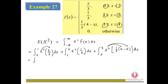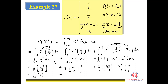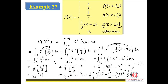We expand by multiplying with X², then write out all terms and integrate each one. We substitute limits: 0 to 1 for the first piece, then 1 to 3 for the second piece, and then 3 to 4 for the third piece. Substituting into X and calculating, we get E(X²) equals 29 over 6.